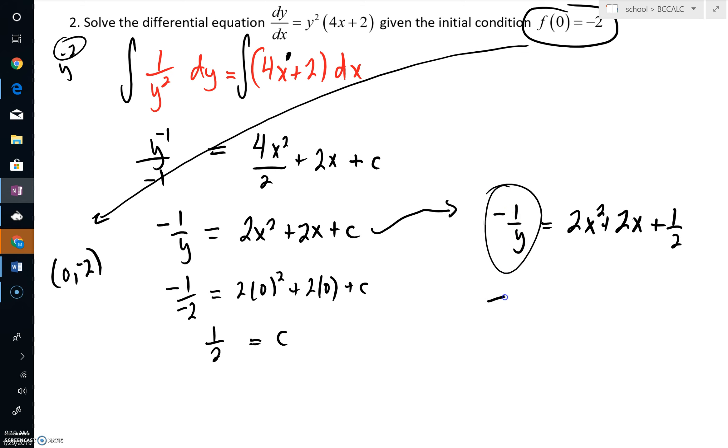negative y over 1 would then have to be 1 all over 2x squared plus 2x plus 1 half. And I could multiply by negative 1 on both sides. And, of course, we'd wind up with this equation right here.